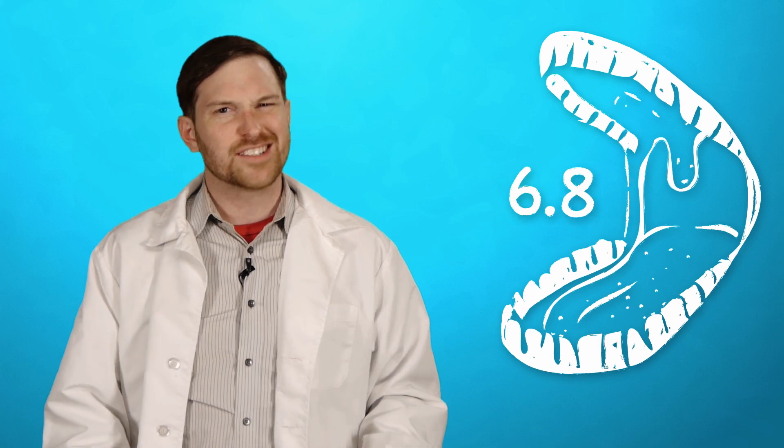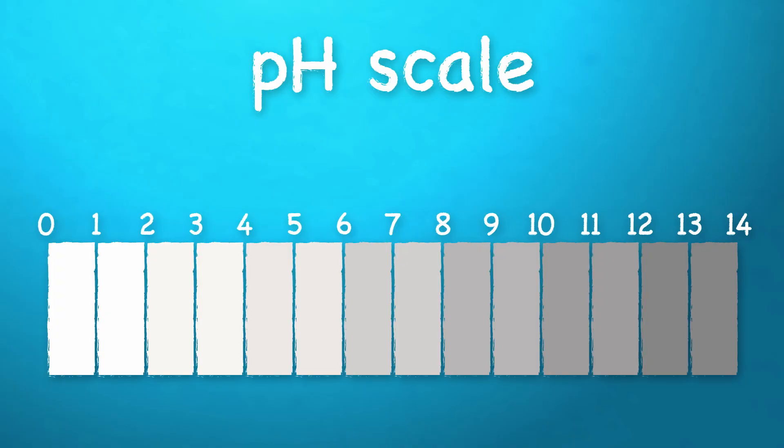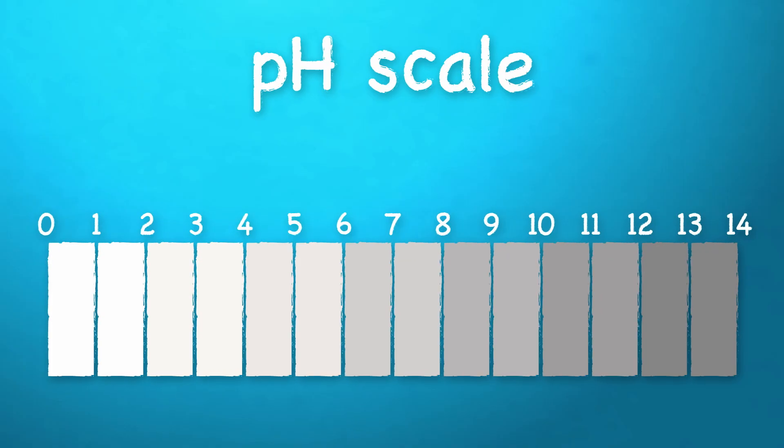On a scale of zero to xenomorph, the human mouth has a pretty neutral pH level, something around 6.8. The pH scale itself runs from zero to 14.